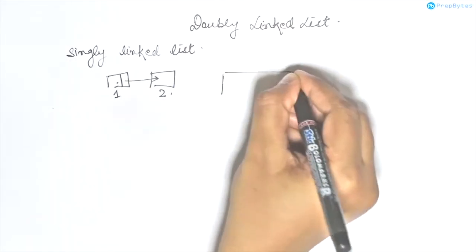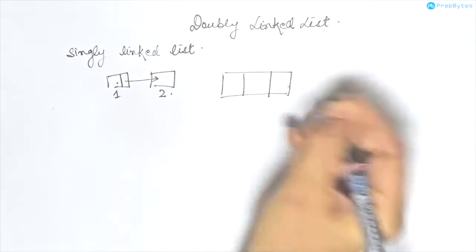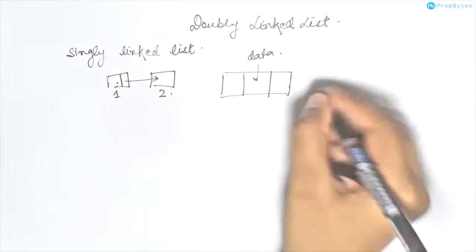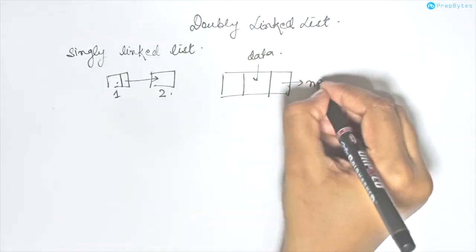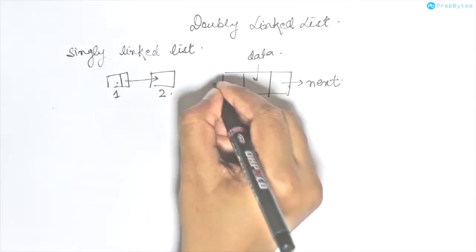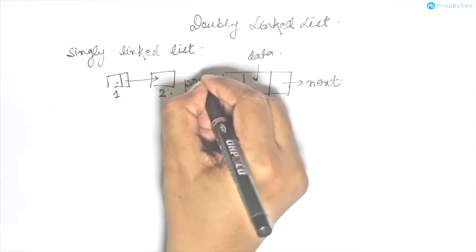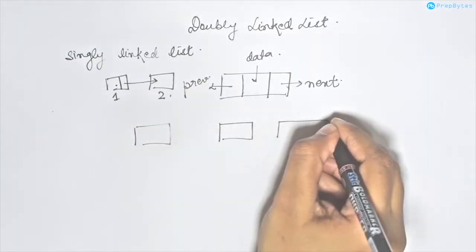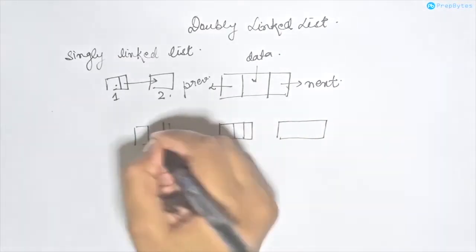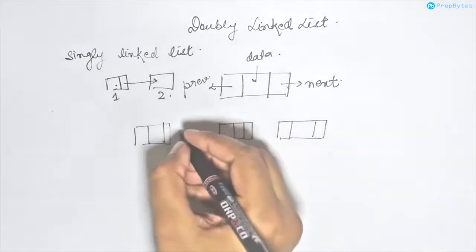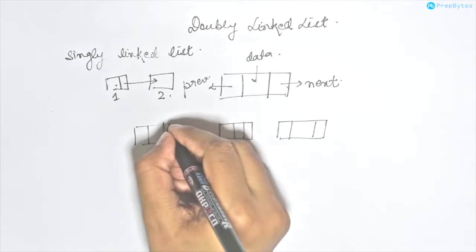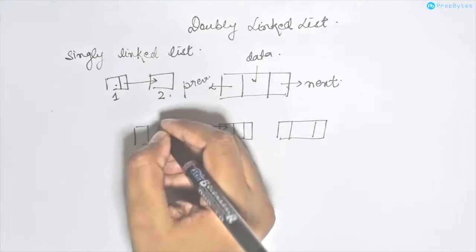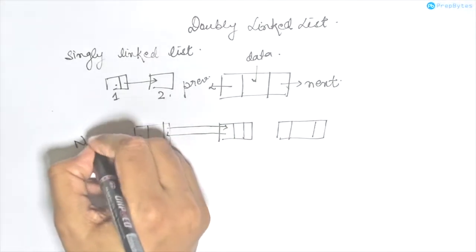So it looks somewhere like this. It has three members: one is for storing data, one is for storing the address of the next node, and one is for storing the address of the previous node. So if we have three nodes, each node will have the address of its next node as well as its previous node. Since this is the first node and it has no previous node, its previous pointer will point to null.